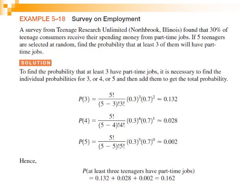Another example — a survey on employment. A survey from teenage research found that 30% of teenage consumers receive their spending money from part-time jobs. If five teenagers are selected at random, find the probability that at least three of them will have a part-time job. We need the values N, X, P, and Q to substitute into the binomial distribution formula.